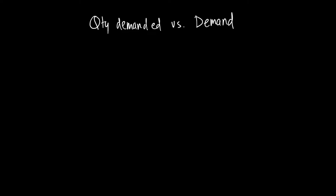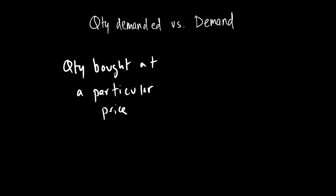Now that we know that the demand curve is downward sloping, I want to distinguish between quantity demanded versus demand. When we say quantity demanded, we mean the quantity bought at a particular price, which means that whenever there is a change in price, we don't say demand changes — we say quantity demanded changes.